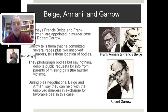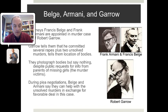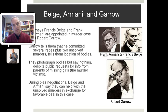Armani and Belgi are appointed to represent Garrow in a murder case. They sit down with him and he tells them he committed this murder, several other murders and rapes, and that the bodies of a couple of victims have never been found. He tells them where the bodies are. They go to the location, find the bodies, and take photographs. They make one mistake — moving an arm to fit within the picture frame — but otherwise do not disturb the scene. They leave and tell nobody.